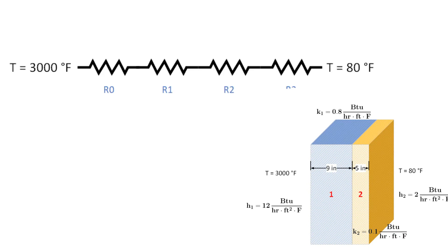Shown is the thermal resistance network for this composite wall. Going from left to right, R0 is due to convection on the left side, R1 is due to conduction through the first slab, R2 is due to conduction through the second slab, and R3 is for convection on the right hand side.